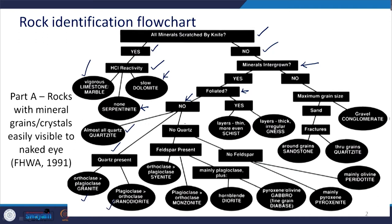If there is no quartz present and if there is feldspar present, then again we need to check whether orthoclase is more or plagioclase is more. Accordingly, we will have either syenite or monzonite. If feldspar is present and there are mainly plagioclase plus hornblende, then it is diorite.